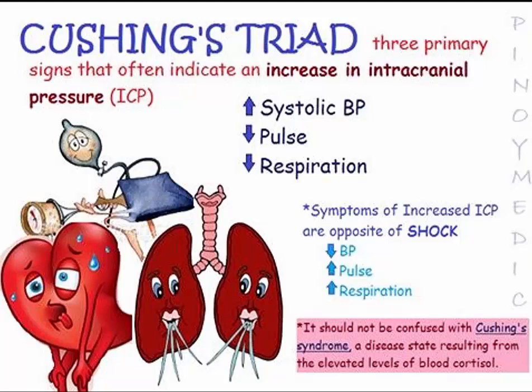Looking at cerebral perfusion pressure, intracranial pressure, and cerebral blood flow: to maintain cerebral blood flow, it is necessary to keep cerebral perfusion pressure in the range of 70 to 100 mmHg. If cerebral perfusion pressure is less than 60, this indicates hypoperfusion. When autoregulation is impaired, cerebral blood flow fluctuates with changes in systemic blood pressure. This may be seen when a patient suctions or coughs, causing a rise in blood pressure resulting in an elevated ICP.